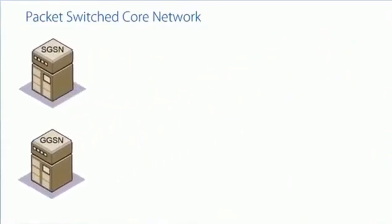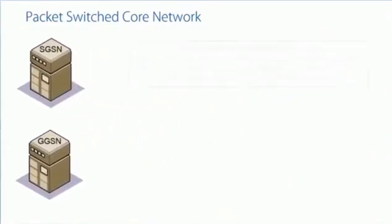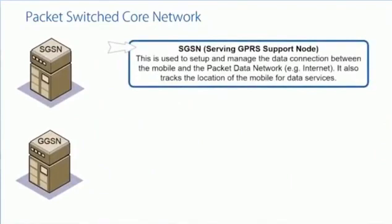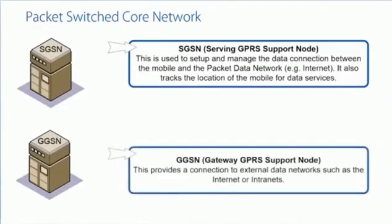The SGSN is where you establish your packet switch connection. It manages subscribers, connects you to the GGSN — the gateway GPRS support nodes — and keeps track of where the mobile is currently located. The GGSN, the gateway GPRS support node, is all about connecting to the external network — the internet or intranet. It's also an anchor point, so you're anchored on this GGSN but can move to different SGSNs as part of mobility.